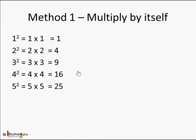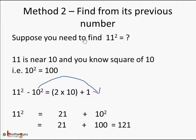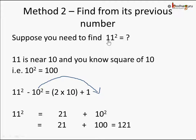Suppose you need to find the square of a larger number — can you do it without using the direct multiplication method? Here is the second method. If a number like 11, 31, or 41 is near a tens number, can we find its square using the previous tens number, which is easier to work with? Suppose you need to find 11 squared. We know 11 is near 10, and 10 squared is 100.